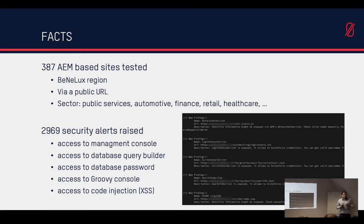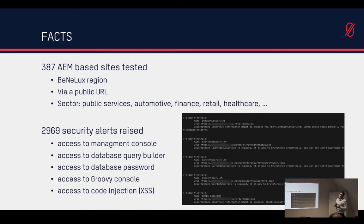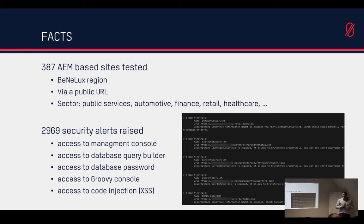Every website we tested is accessible via public URL, covering different sectors: public services, automotive, finance, media, retail — you name it. We came up with almost 3,000 security alerts — very various things like access to a management console, access to a database query builder, access to an Oracle database password, access to a Groovy console, potential code injection, and reflected and persistent XSS. There were a few sites that had a lot of issues and a few that had none at all — so there are top-class students and not-so-top-class students, let's put it that way.